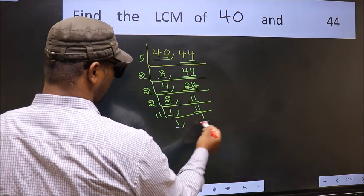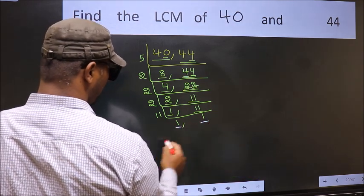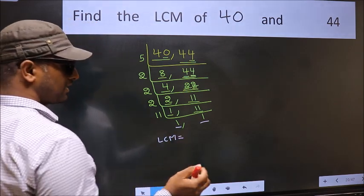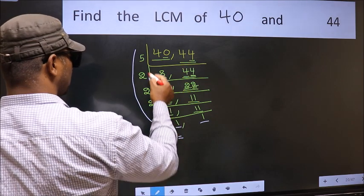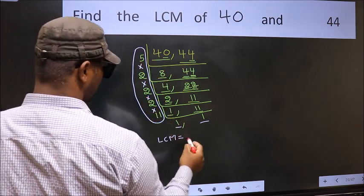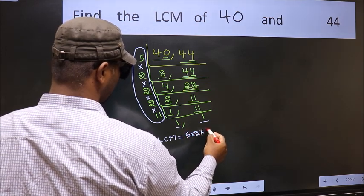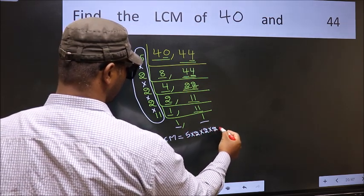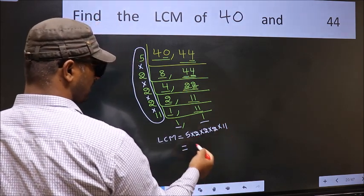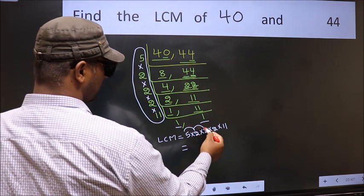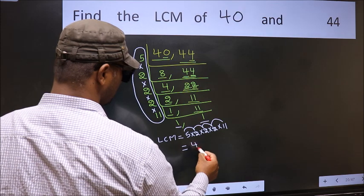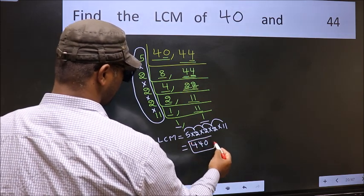So we got 1 in both places. Our LCM is the product of these numbers: 5 into 2, into 2, into 2, into 2, into 11. Let us multiply these: 5 into 2 is 10, into 2 is 20, into 2 is 40, into 11 is 440. So 440 is our LCM.